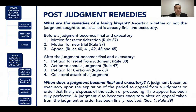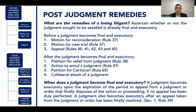However, if a judgment becomes final and executory, the losing litigant still has available remedies: petition for relief from judgment under Rule 38, action to annul a judgment under Rule 47, petition for certiorari under Rule 65, and lastly, a collateral attack on a judgment is also possible.